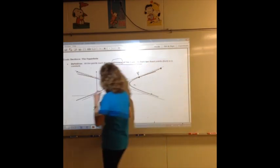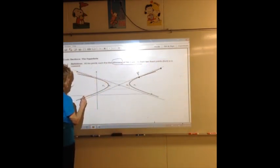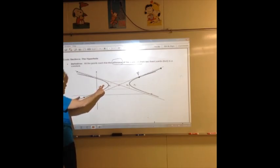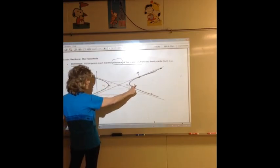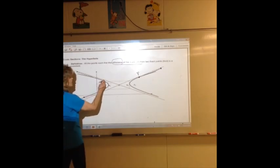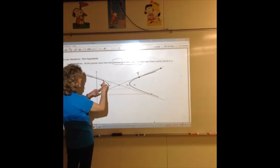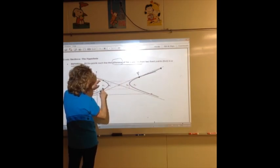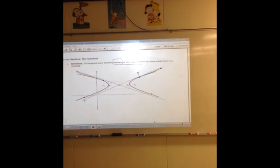Then that means if I pick another point on one of the branches, maybe over here, and this is T, and if I measure from T to focus 1 and also T to focus 2, and if I subtract those distances, big minus small, I'm going to get the same number again. And if I pick another point over here and measure from point to focus and point to focus and subtract big minus small, I'm going to again get the same number, 10.